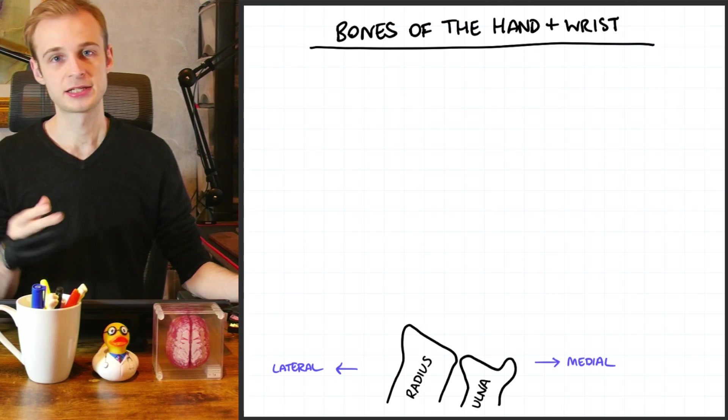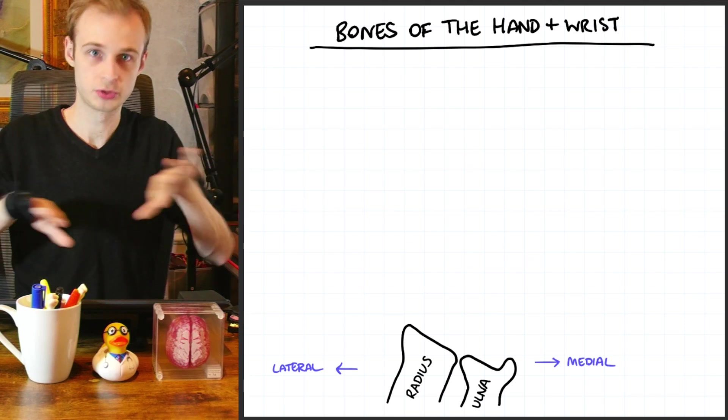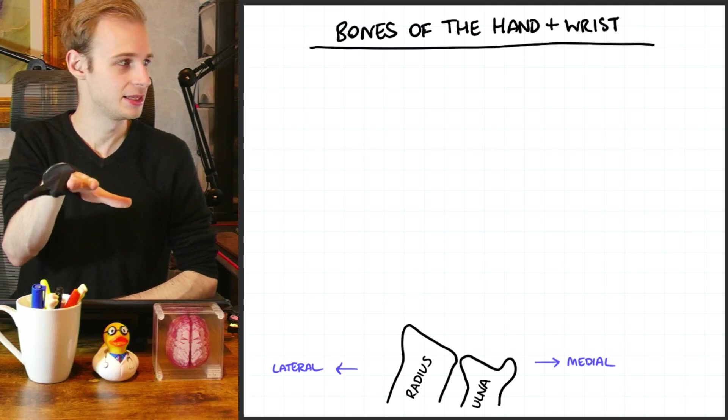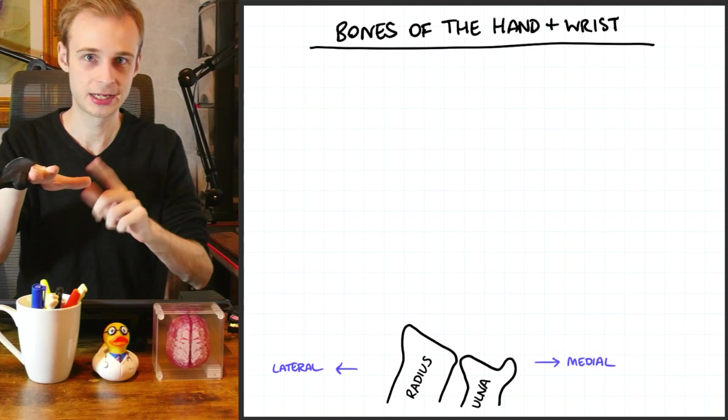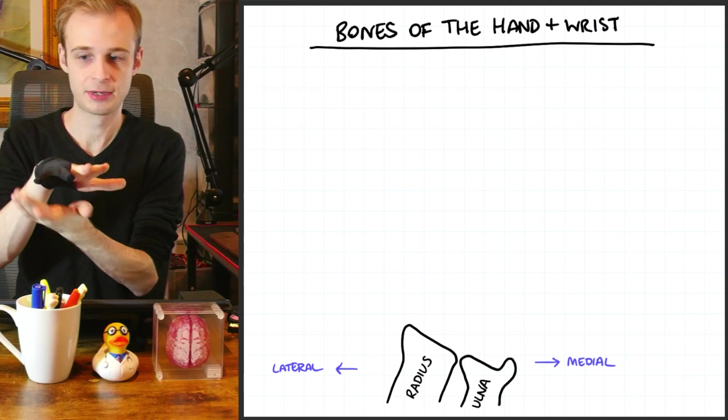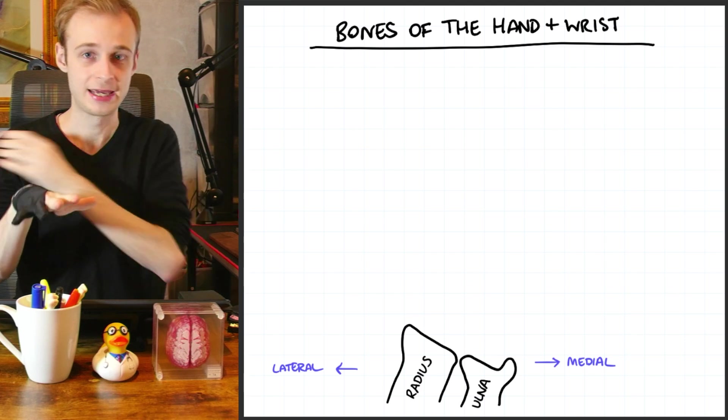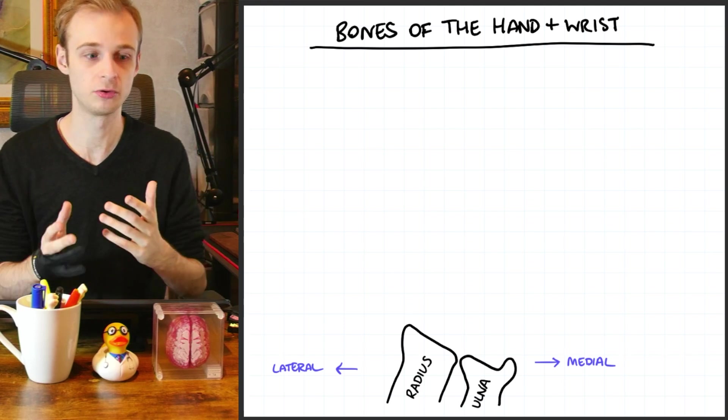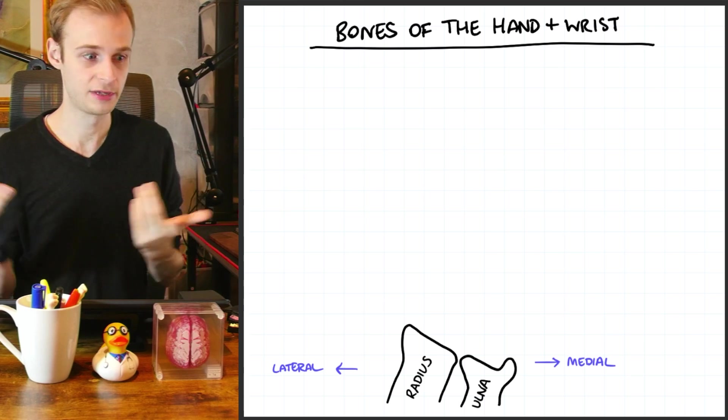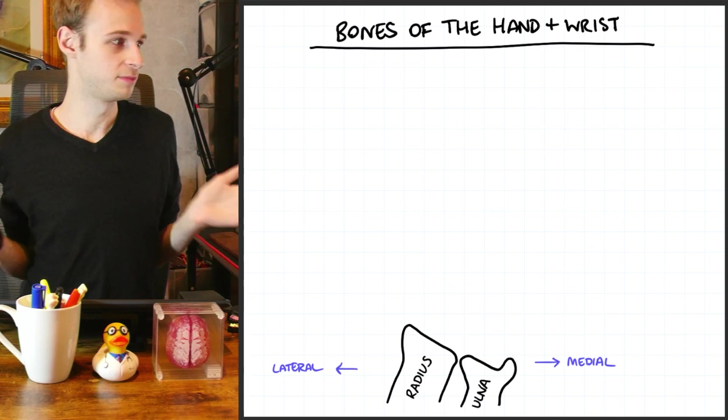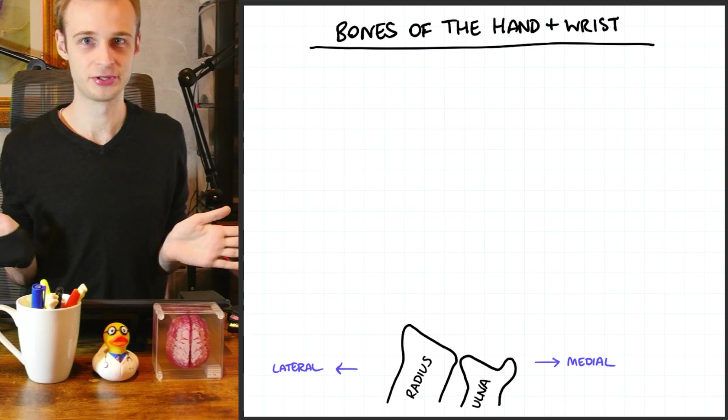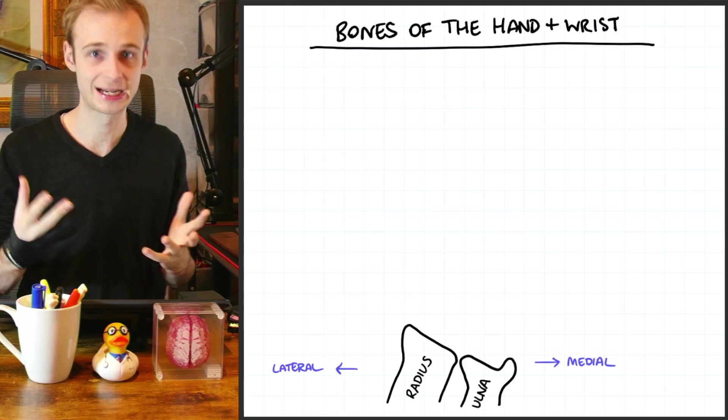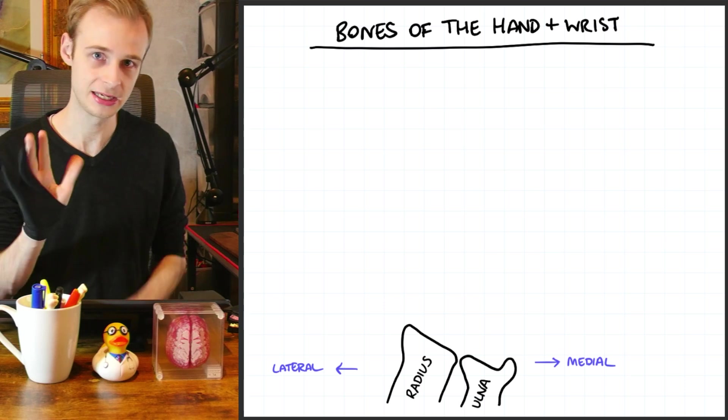Remember that medial in anatomy is talking about closer to the midline and lateral talking away from the midline and it's confusing with hands because if we've got our hand in this position obviously it looks like my thumb is coming into the midline and my little finger going away. However we have to remember that in anatomical terms we need to think about the anatomical position. If you think about da Vinci's Vitruvian Man in this position, the thumbs face outwards and therefore the thumbs are considered the lateral part of the hand and the little finger the medial part.